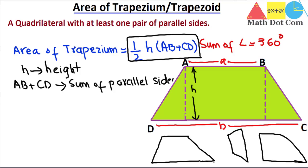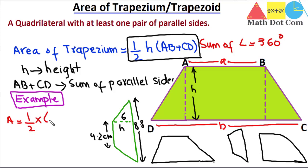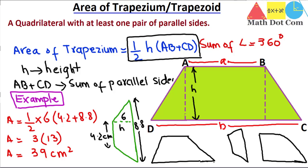Let's find the area using an example with a different-shaped trapezium so you don't get confused. The shape has a height of 6 cm, one parallel side of 4.2 cm, and another parallel side of 8.8 cm — two parallel and two non-parallel sides, confirming it is a trapezium. Using the formula: Area = 1/2 × 6 × (4.2 + 8.8) = 3 × 13 = 39 cm². That is the required area.